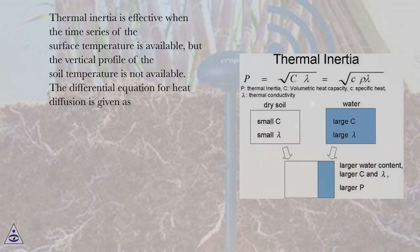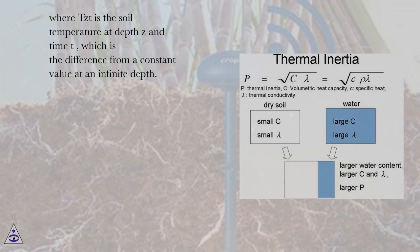The differential equation for heat diffusion is given as: where T(z,t) is the soil temperature at depth z and time t, which is the difference from a constant value at an infinite depth.